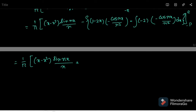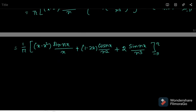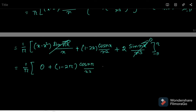Writing out: (1 minus 2x) cos(nx)/n² — keeping track of the signs, minus minus plus, minus minus plus — the integration of 2 cos(nx)/n² produces 2 sin(nx)/n³. Applying the limits, the sine terms all produce 0.